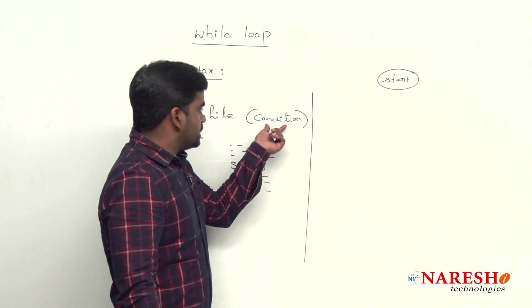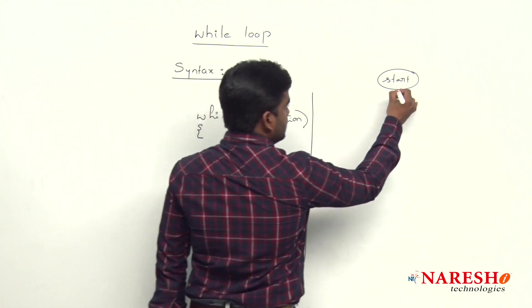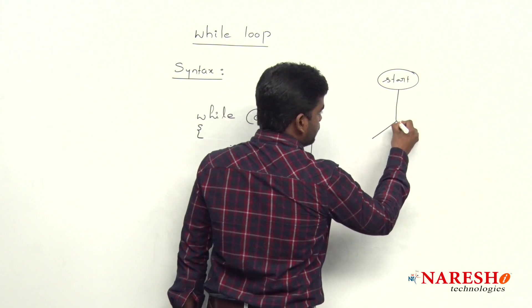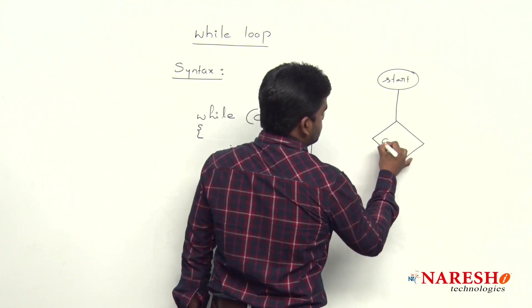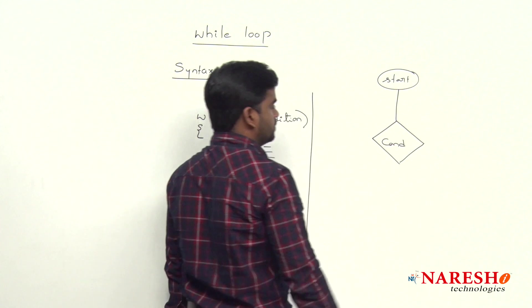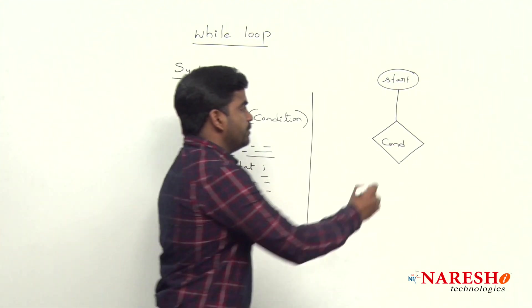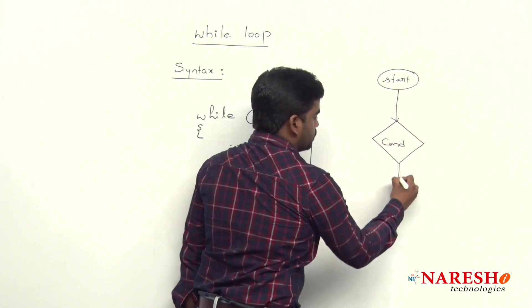First, it will check the condition. The conditions we are representing with the rhombus. And we know that for every condition, we have two options. First, if it is true.